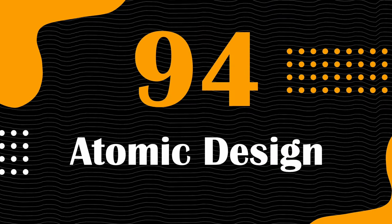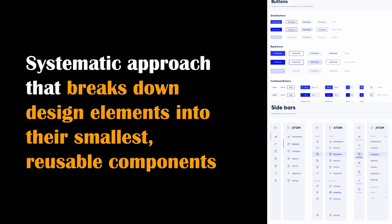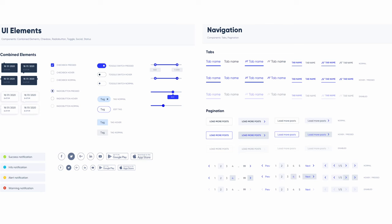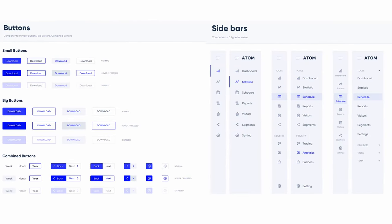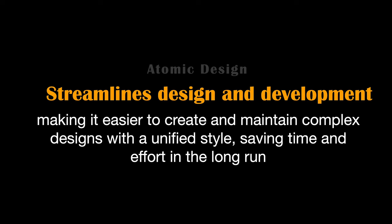Let's move on to Atomic Design — a systematic approach that breaks down design elements into their smallest reusable components, such as buttons, forms, and icons. It is needed to create consistent and efficient design systems. Designers use Atomic Design to construct user interfaces by assembling these atomic components into more complex structures, ensuring visual coherence and scalability. In web design, designers use atomic design principles to construct reusable elements like buttons, forms, and cards, ensuring visual and functional harmony throughout a website or application.